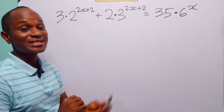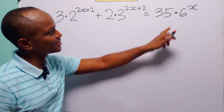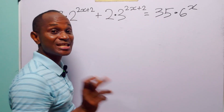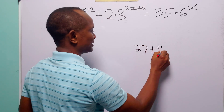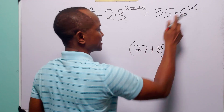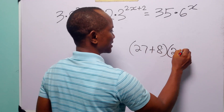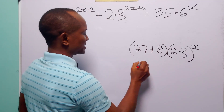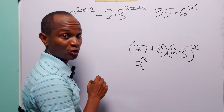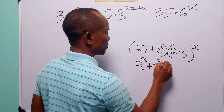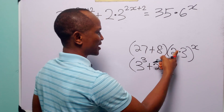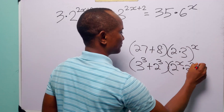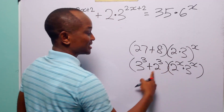Hello and welcome. Let us solve this exponential equation. We start with the term on the right hand side. Notice that 35 is the sum of 27 and 8, and 6 is equal to 2 times 3. We have 27 as 3 cubed and 8 as 2 cubed, and when we open these brackets we have 2 to the power x multiplied by 3 to the power x.